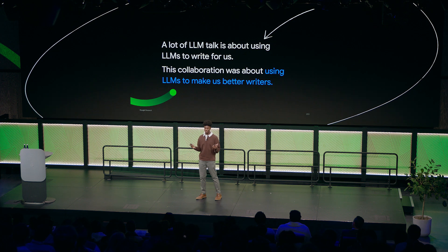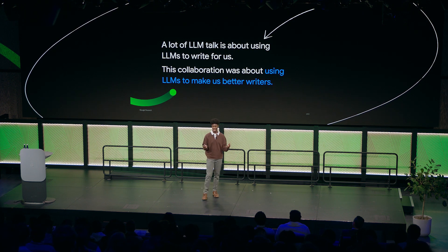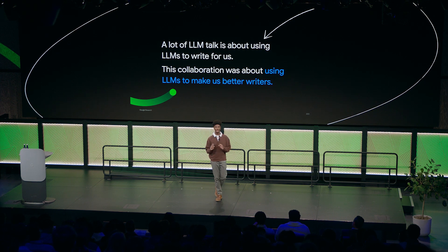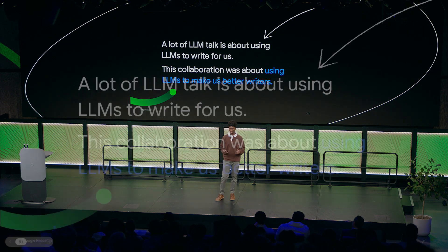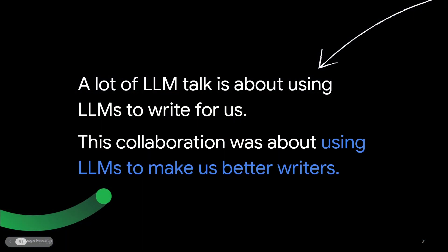And most importantly, it does so in a way that doesn't remove the creator from the process. Before we started working with Lupe, we imagined that what a rapper might want out of AI is something that could write raps for them. But in reality, this could not have been farther from what Lupe wanted. Rather than something that writes raps for him, Lupe wanted something that could make him better at writing raps — something that could take care of all the tedious parts of the process so he could focus on what he really cared about.